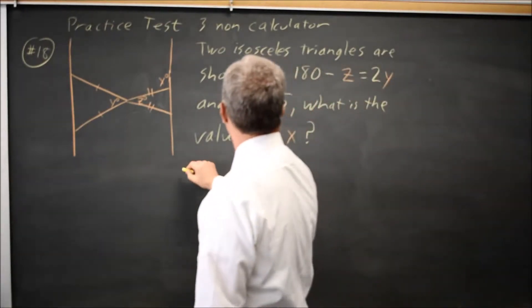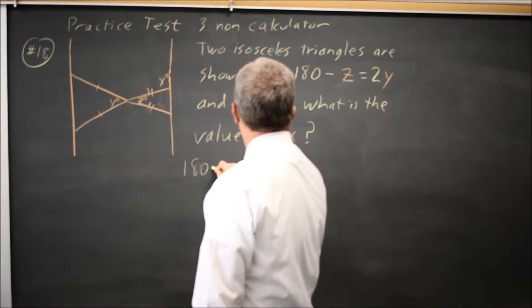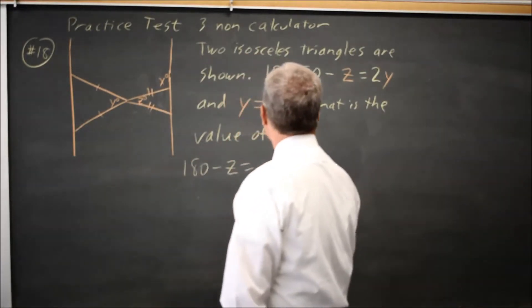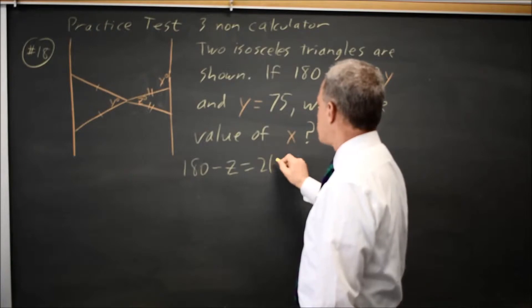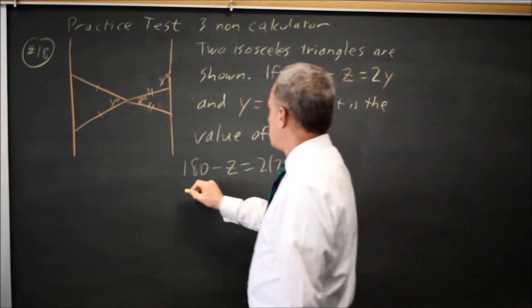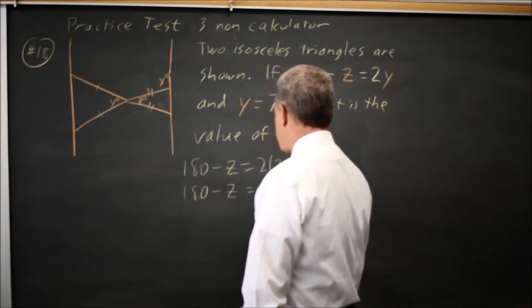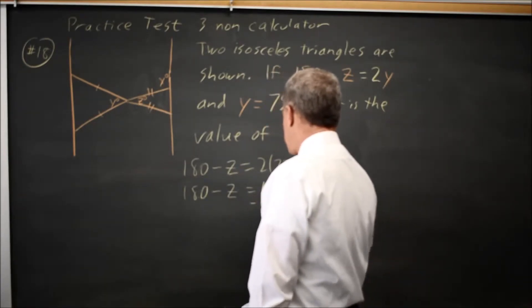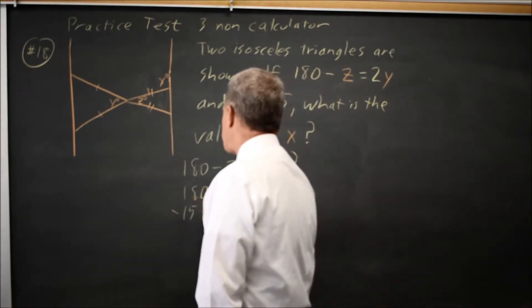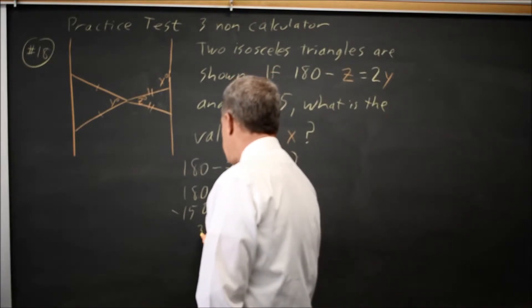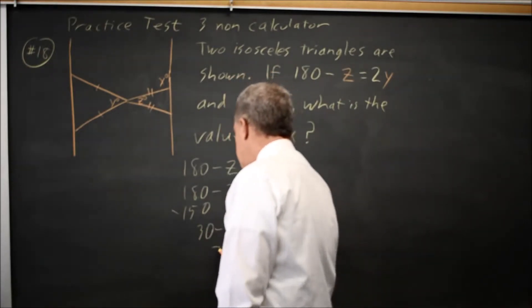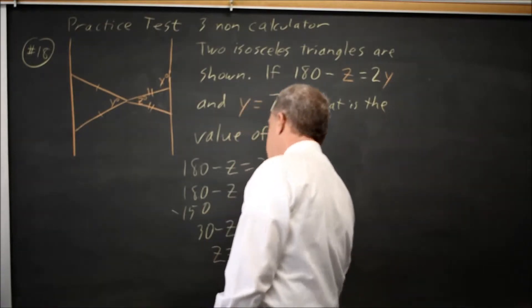So in their equation, 180 minus z equals 2y, so that's twice 75, 180 minus z equals 150. Subtract 150 from both sides, and you get 30 minus z equals 0, so z equals 30.